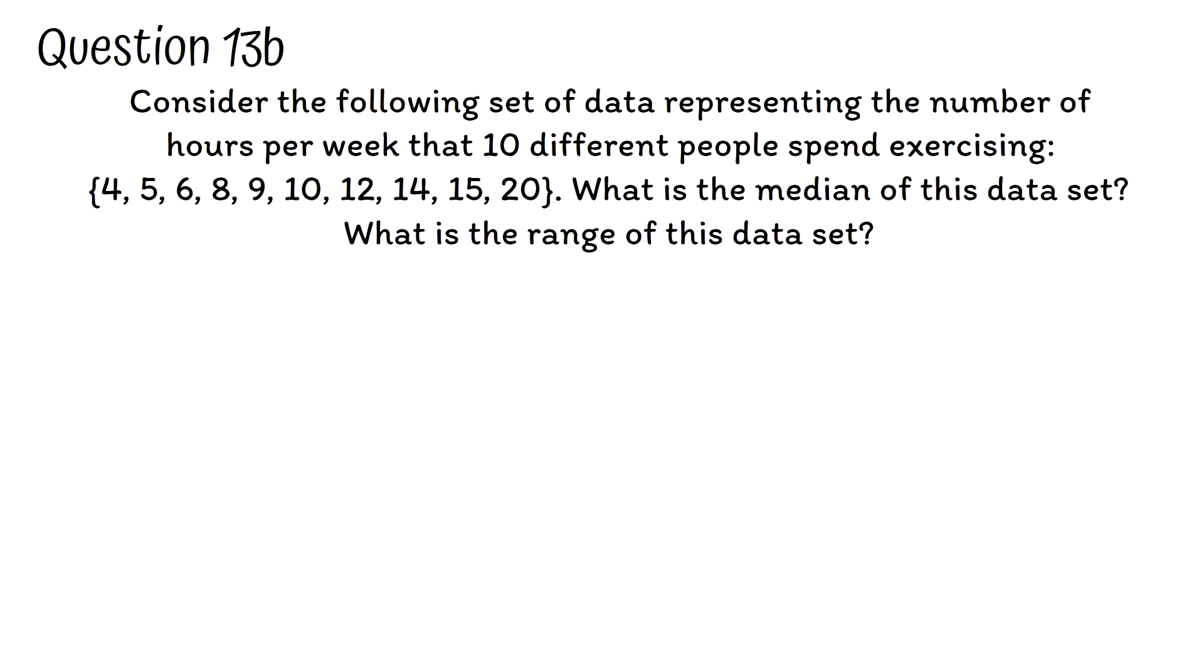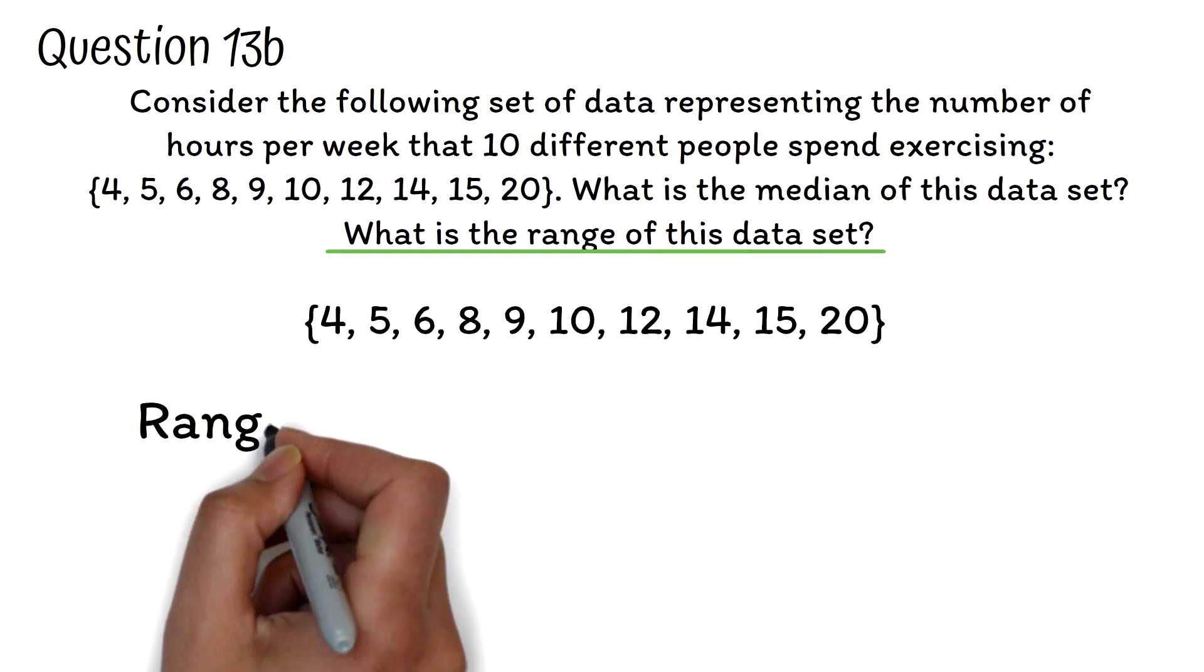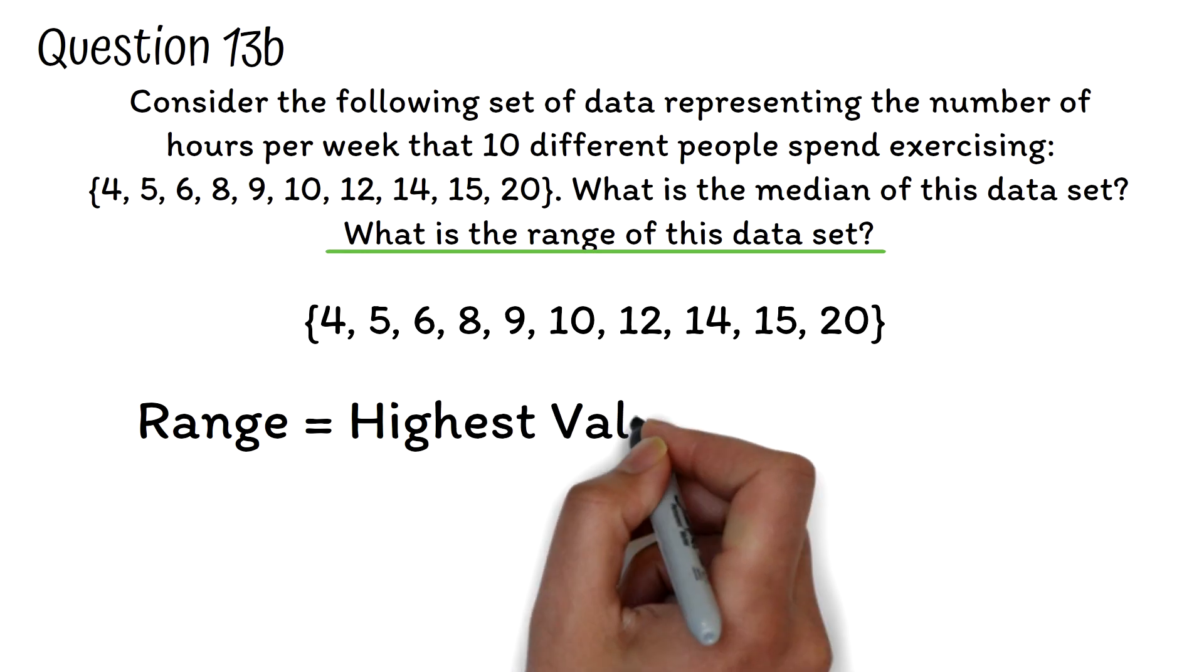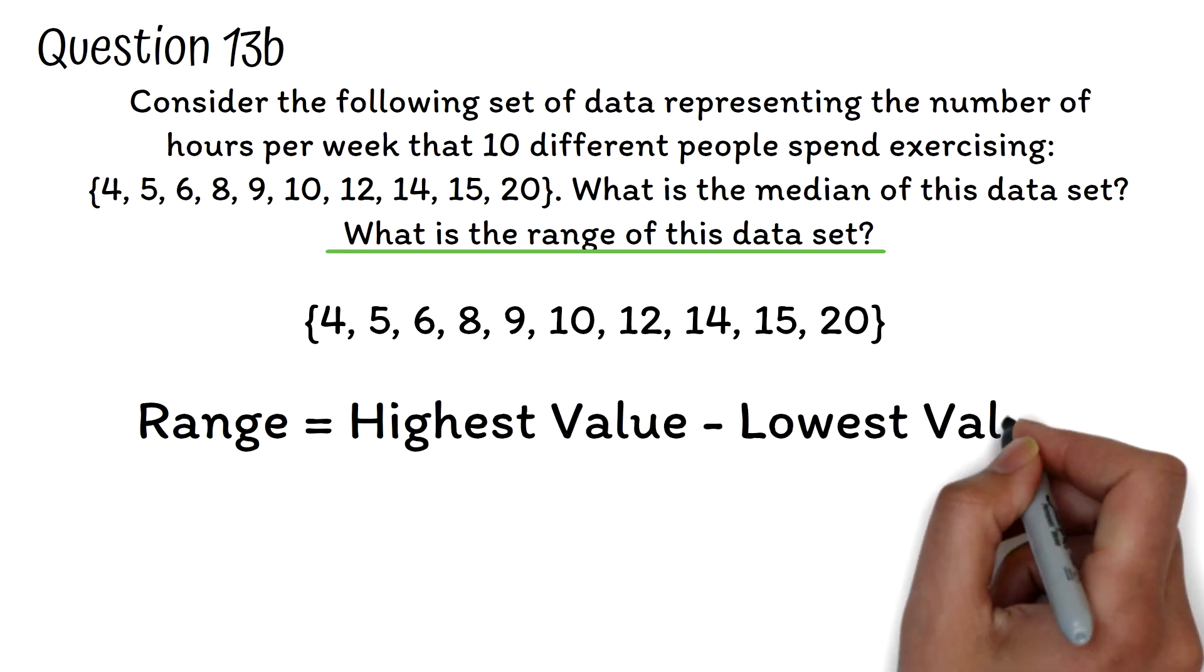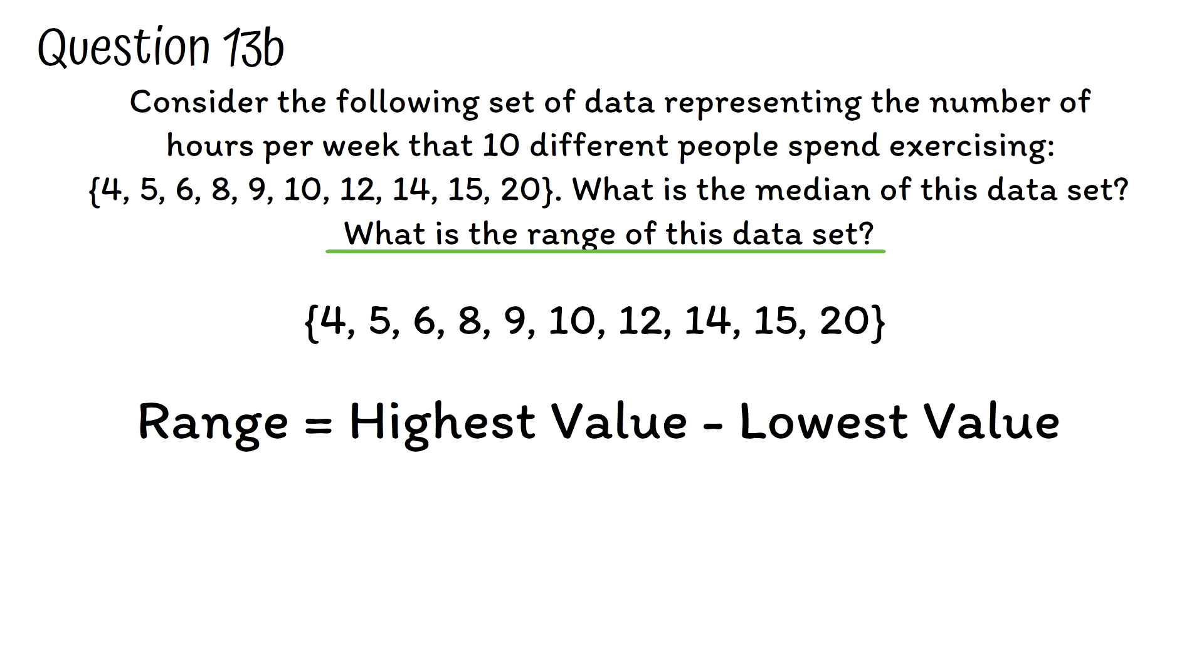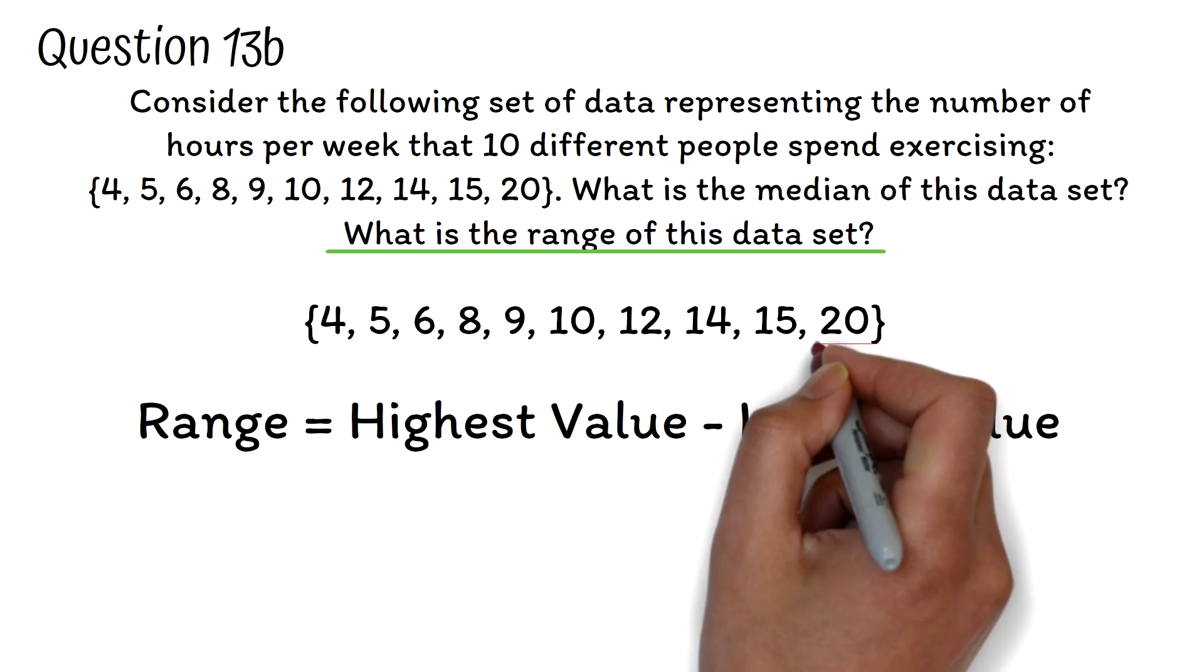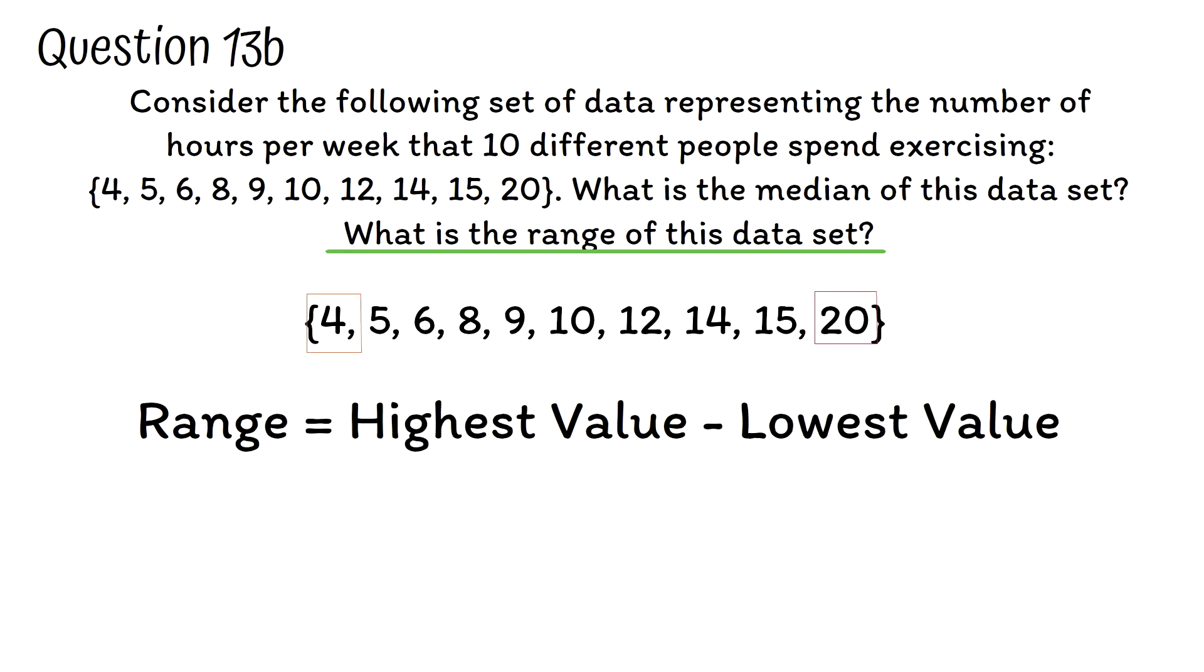Now let's look at the B part of question 13. That is, what is the range of this data set? The range of a set of data is the highest value of the set minus the lowest value. With the set of data given, the highest value is 20 and the lowest value is 4. Hence, 20 minus 4, and that gives us 16 as the range.